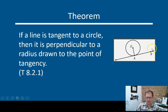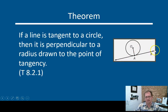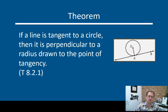Here we have line AB. Point A is the point of tangency, O is the center of the circle, and OA is a radius. If we are told that AB is a tangent, then angle OAB must be a 90-degree angle. A radius intersects a line of tangency at a perpendicular angle — it has to happen.